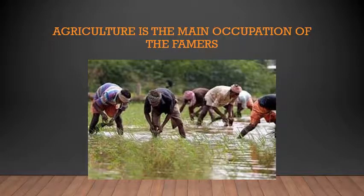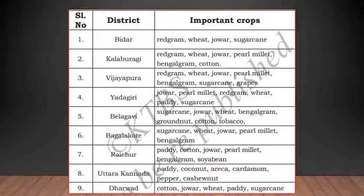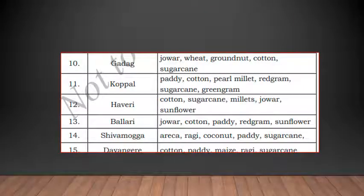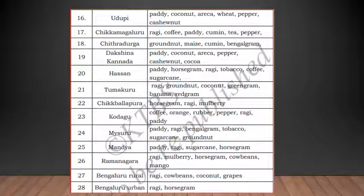On page 96, there is a list of different districts in Karnataka and the important crops grown there. I will read out some for you. The important crops include: Kalaburagi — red grams, wheat, jowar, sugarcane; Vijayapura — red gram, wheat, jowar, pearl millets, Bengal gram, sugarcane, grapes. Each different district has different kinds of crops.